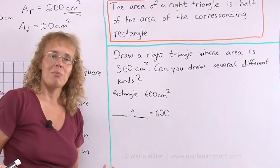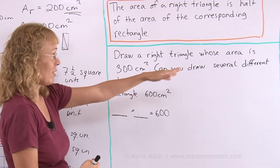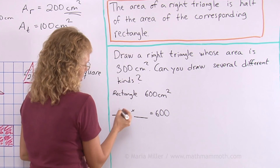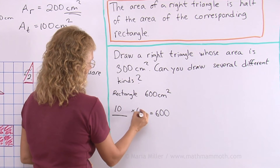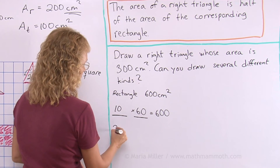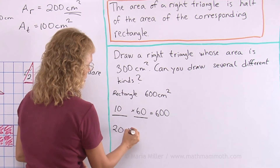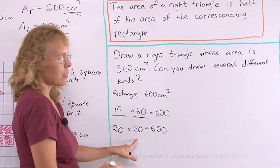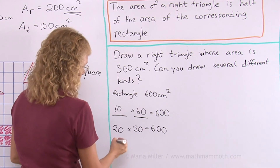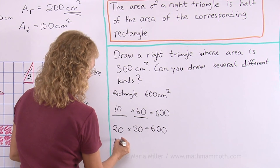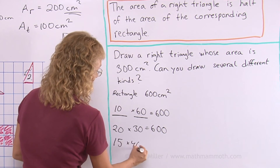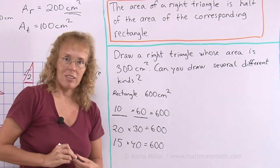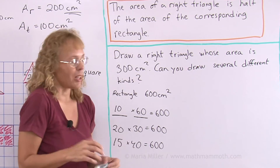I have to find something times something that equals 600 — the two sides of the rectangle. And I can find all kinds of numbers, so I can draw several different kinds of triangles. For example, 10 times 60, or 20 times 30, or 15 times 40, or 6 times 100 — all in centimeters. There are all kinds of possibilities.